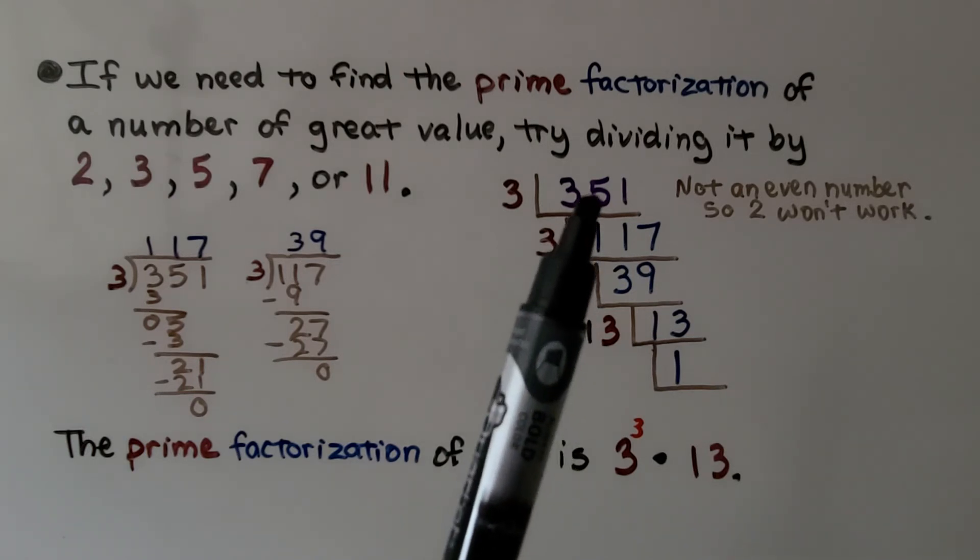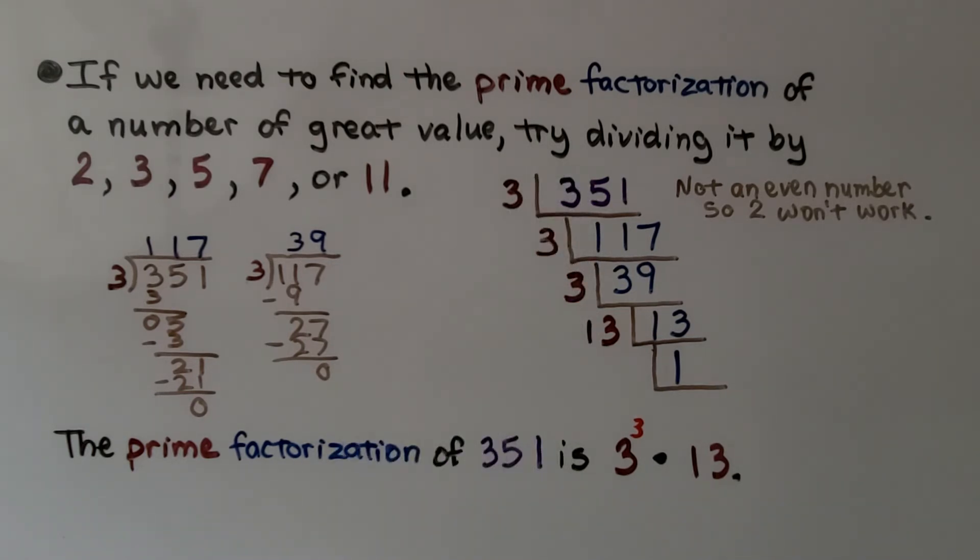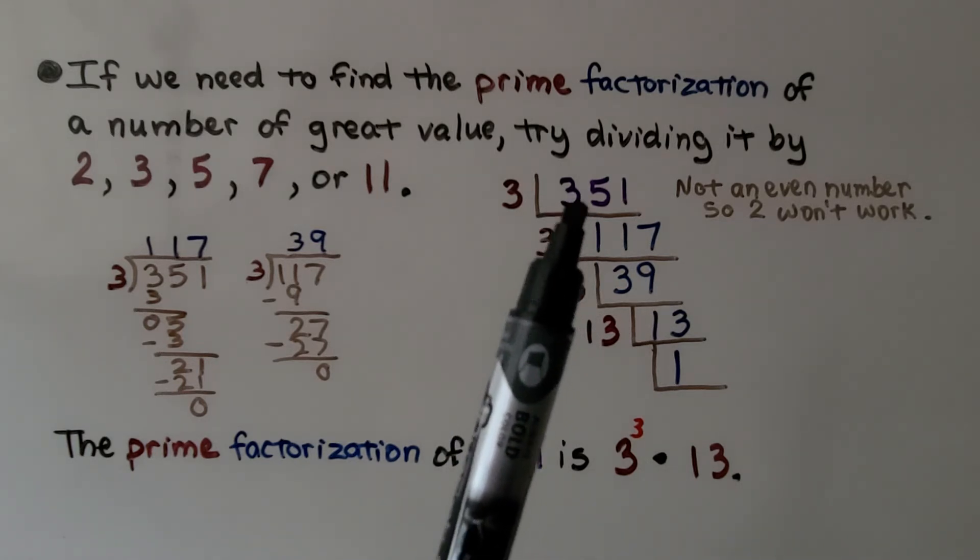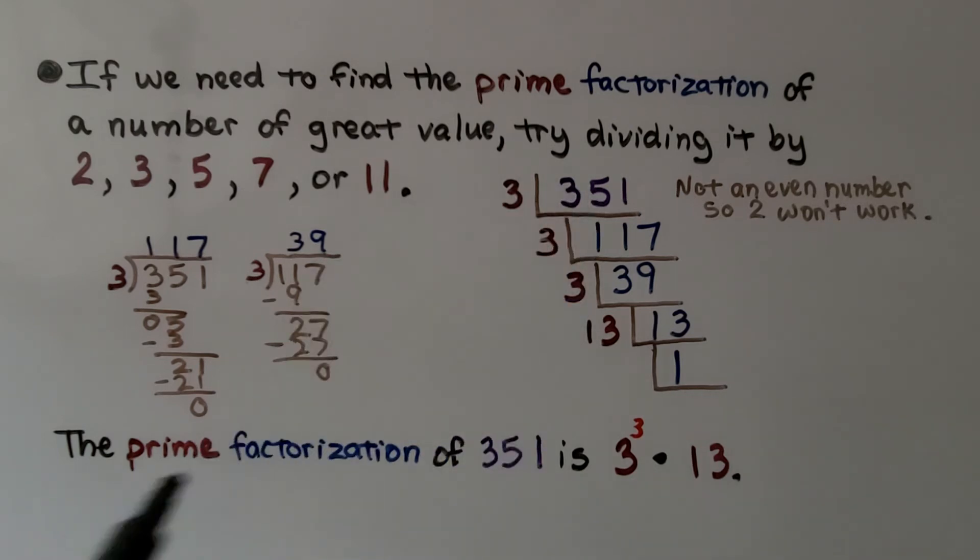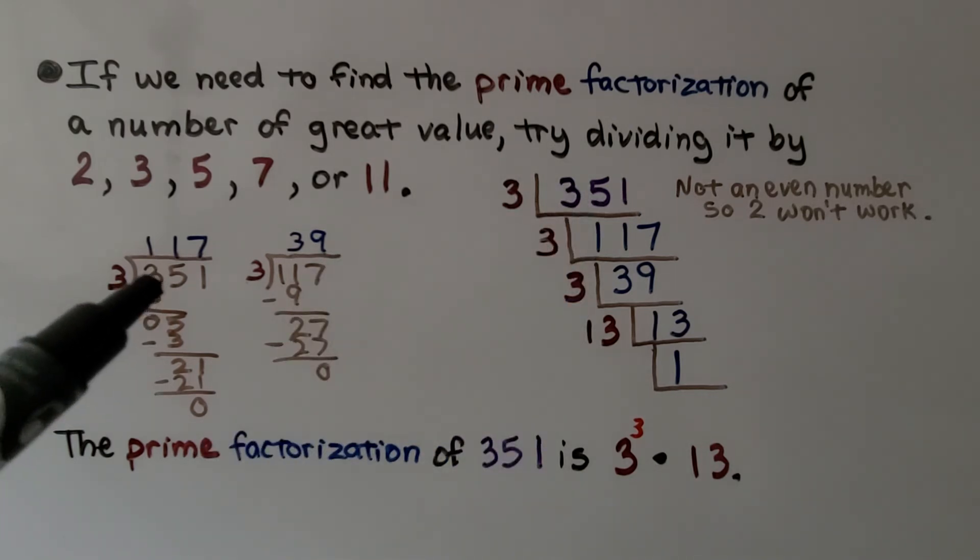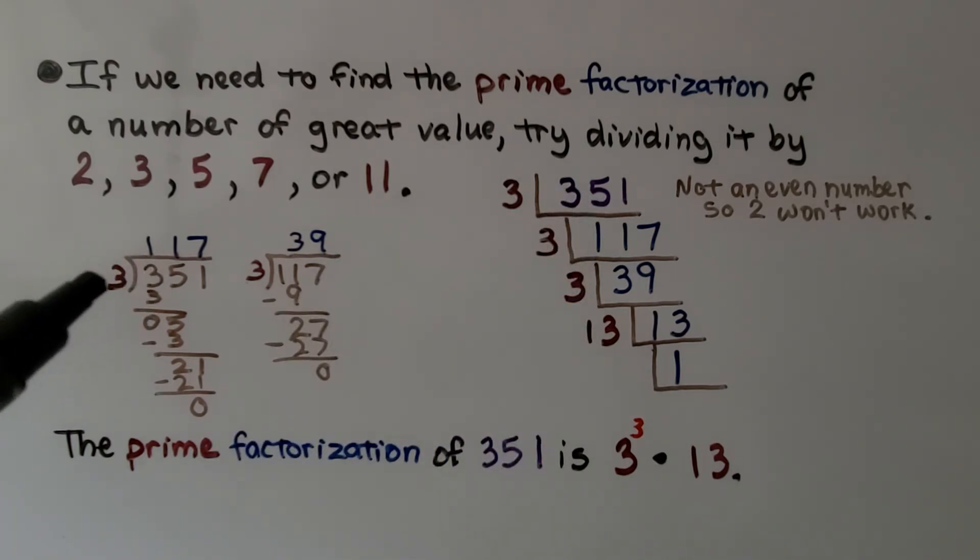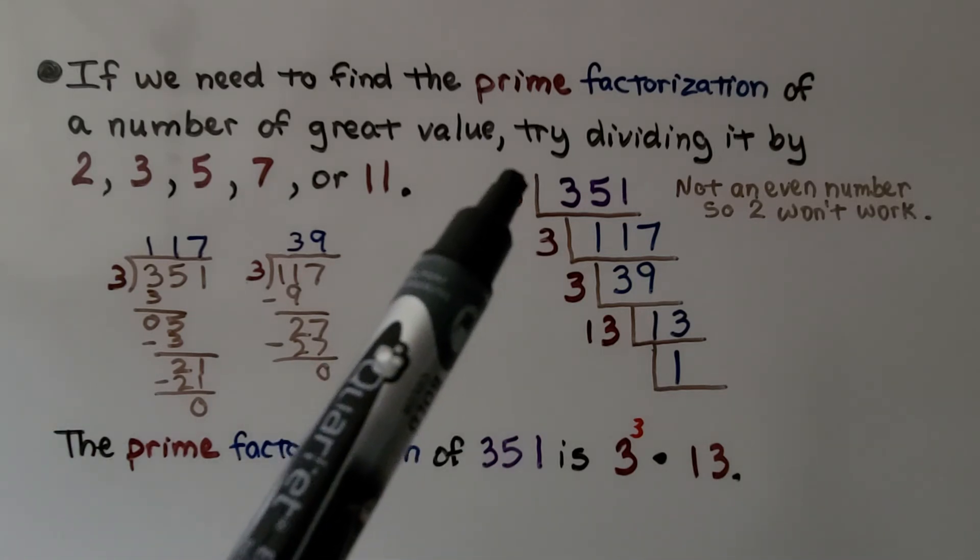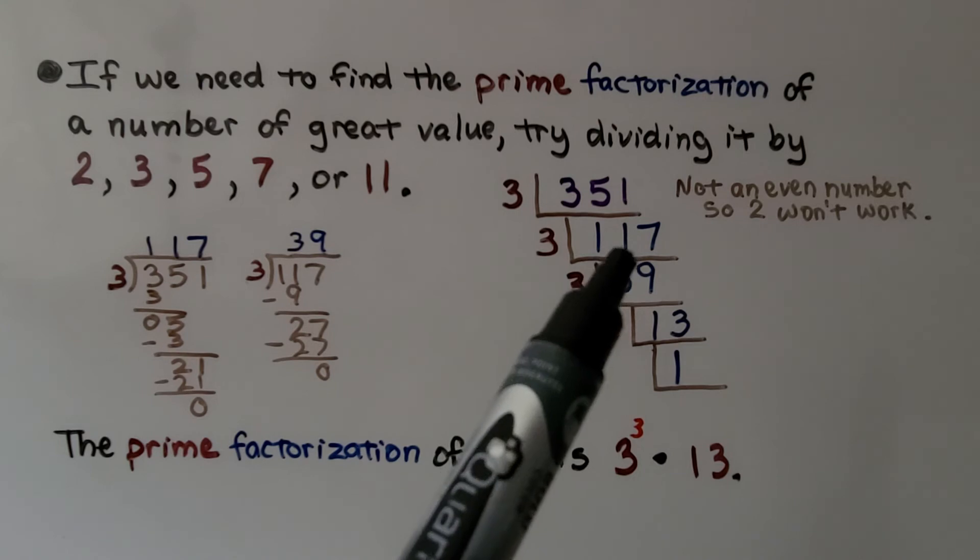We have 351, and we need to find the prime factorization for it. It's not an even number, so 2 won't work. So we can try doing 351 divided by 3. I got 117. So we know we can put a 3 here, and we know we can put 117 here.